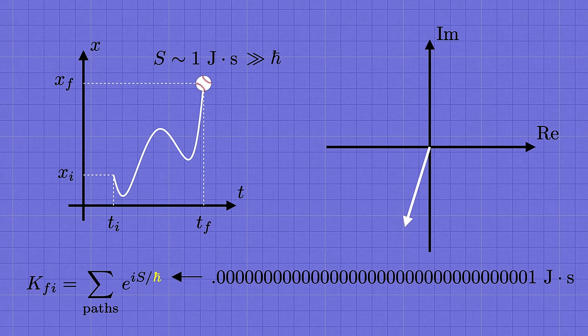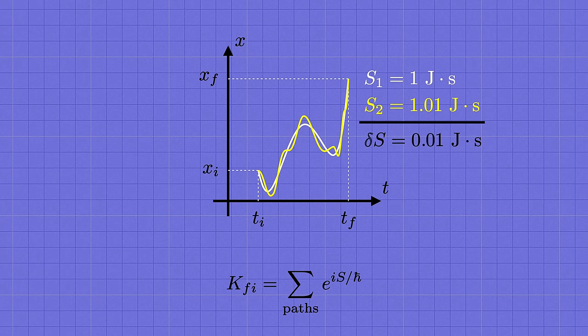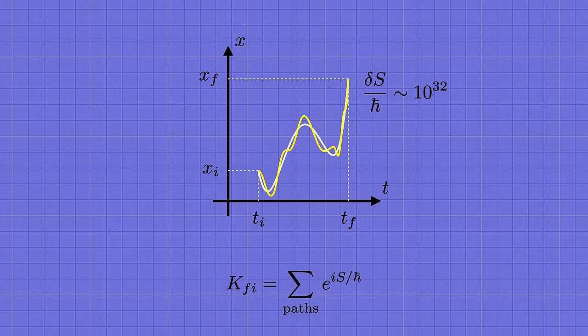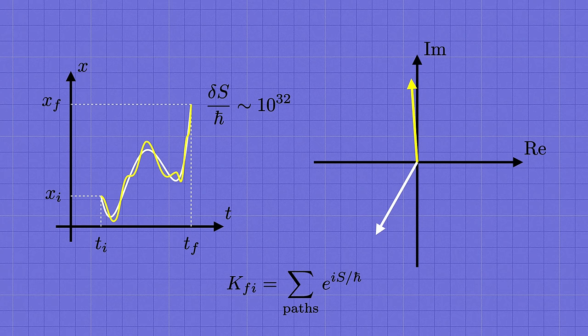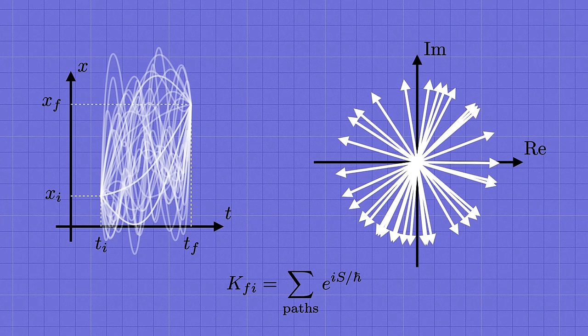And so the angle s divided by h bar will be an enormous number for a typical path for a baseball, on the order of 10 to the 34 radians. Starting from phi equals zero, it's like we flicked this arrow so hard that it spins around and around a bajillion times until it lands in some random direction. But now let's pick a slightly different trajectory and consider what that contributes to the sum. It's a very similar path to the one we started with, so its action will only be slightly different from the first one. Maybe the first path had an action of one joule second, and this new one has 1.01 say, so that the change in the value of the action between them is 0.01 joule seconds. It doesn't matter what the precise numbers are, because again, when we divide by the incredibly tiny value of h bar, even that small change in the action at the classical scale will produce a massive change in the angle, in this case something like 10 to the 32 radians.